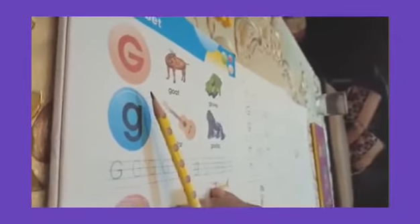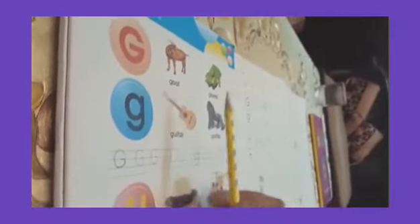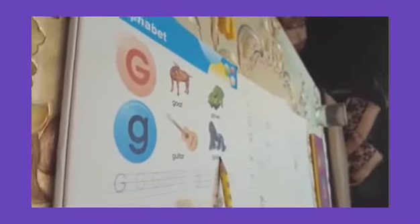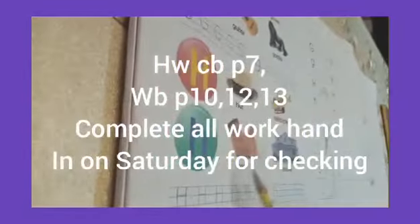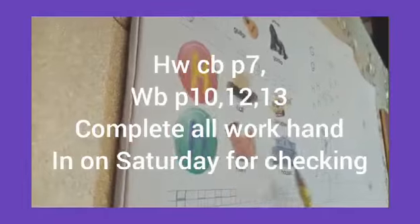Homework. Learn the letter sound, and the letter name, and the reading. G: goat, guitar, gorilla. H: capital H, small h. Hat, helicopter, hen, house.